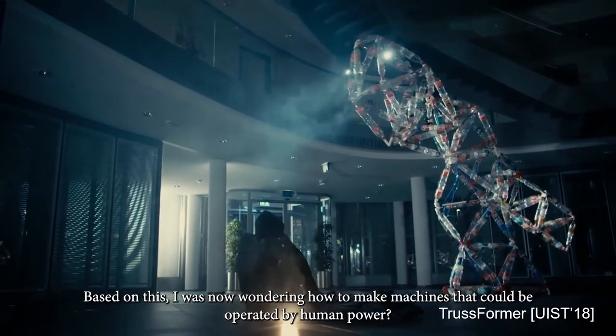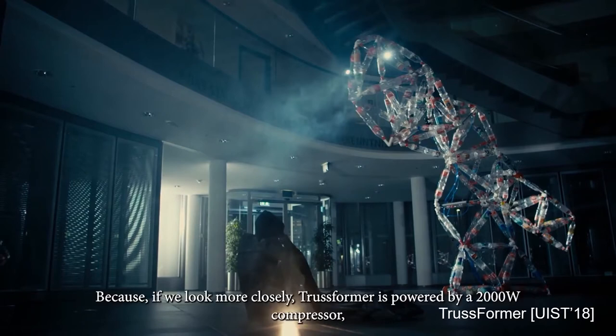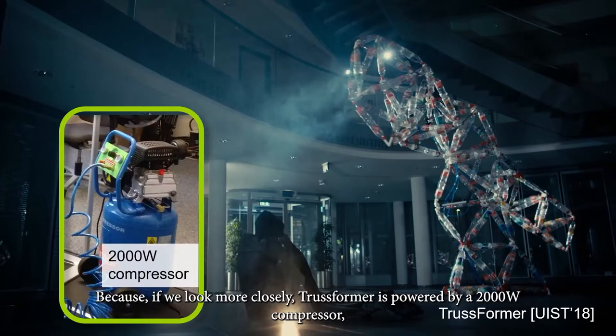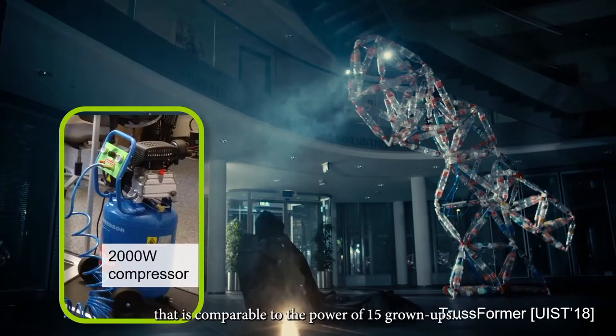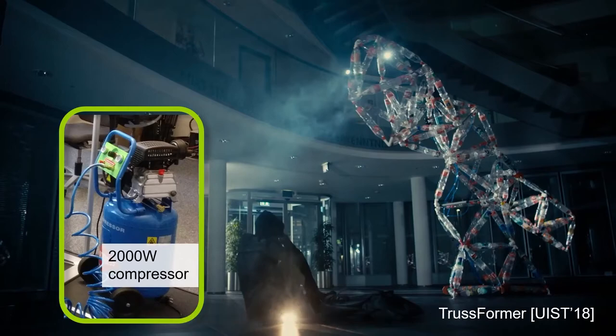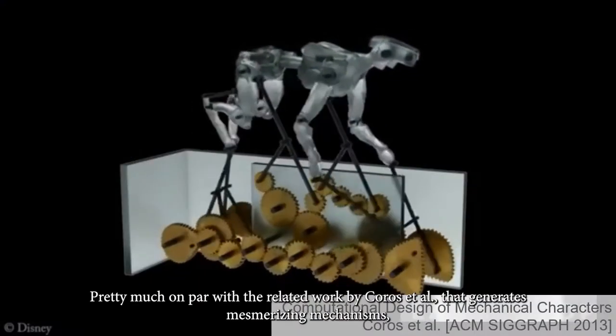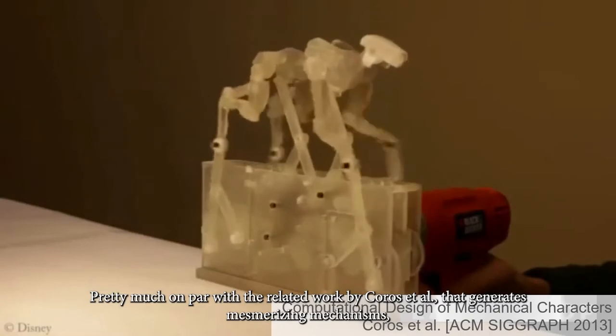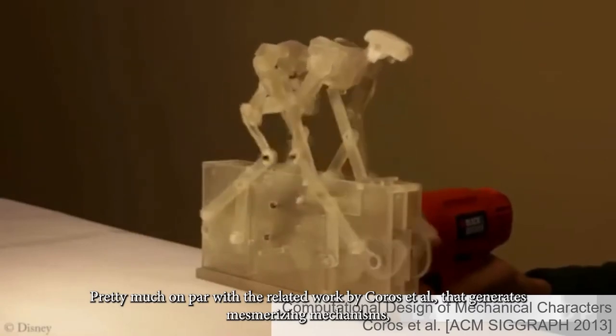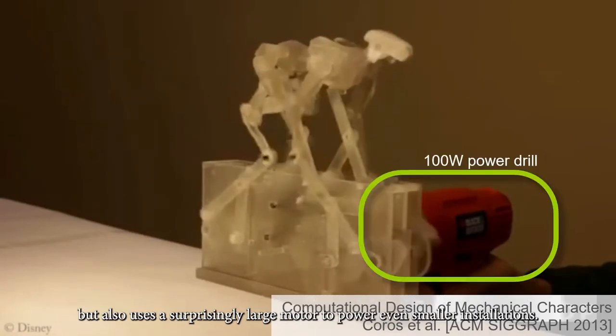Based on this, I was now wondering how to make machines that could be operated by human power. Because if you look more closely, Trussformer is powered by a 2000-watt compressor that is comparable to the power of 15 grown-ups, pretty much on par with the related work by Coros et al. that generates mesmerizing mechanisms but also uses surprisingly large motors to power even smaller installations.